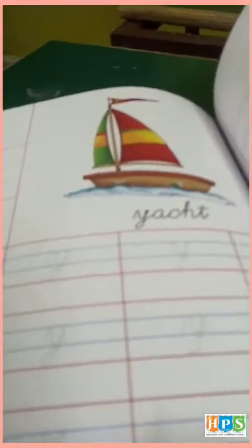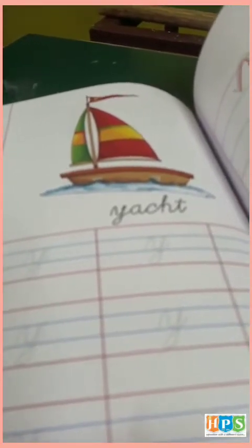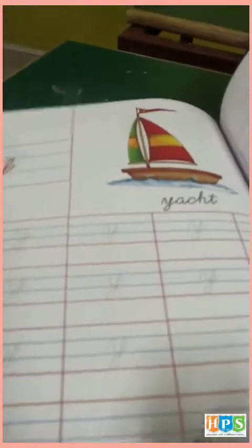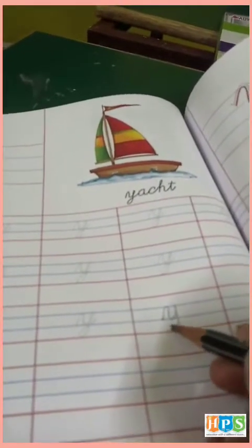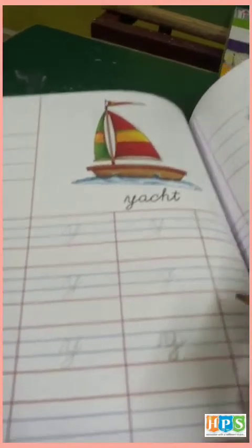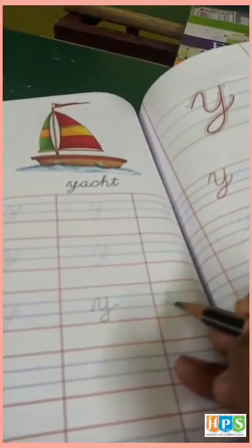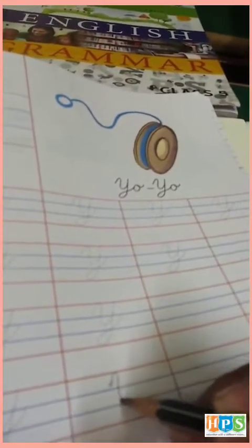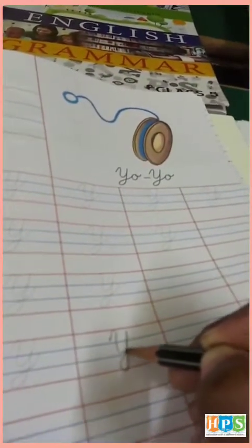Y. Small y jaise banta hai, bas usko thoda sa u bana ke pehle, aur niche tab leke aayenge, aur phir vaapis upar. Y. Capital same — bas upar ki line se banega, aur last line tak aayega.